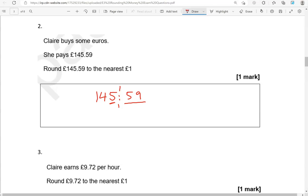Again, 50 pence and above means rounding up. So we're going to add 1 to the 5, keep the digits in front unchanged. So £146 is the answer.